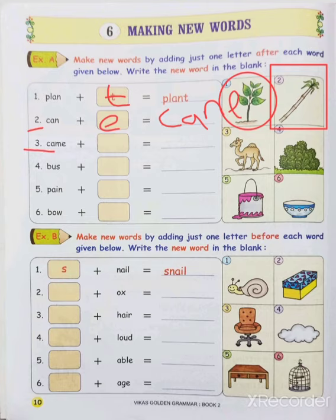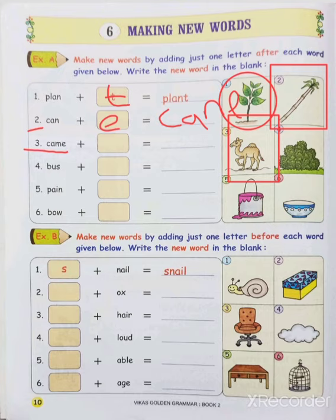Moving to the third one: C, A, M, E — came. The picture given here is a camel. What is the spelling of camel? C, A, M, E, L. If we add L here, what new word do we get? C, A, M, E, L — that is camel.